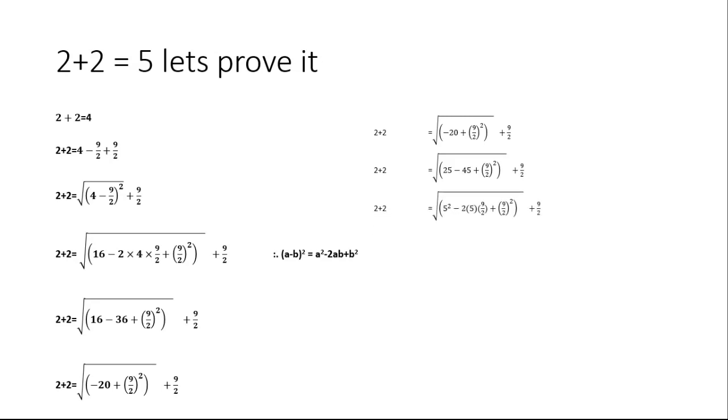Make square of 25 minus 45 plus (9/2)². 5 multiplied by 5 is equal to 25, so make it 5² minus 2 into 5 into 9/2 plus (9/2)² whole square, whole and root.